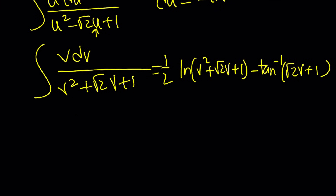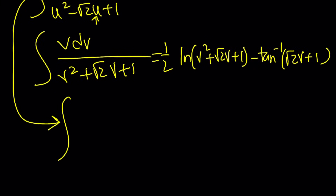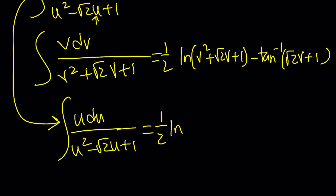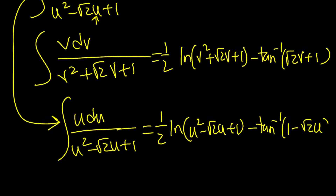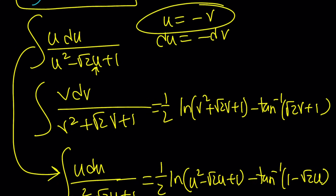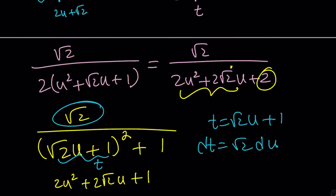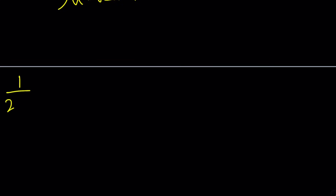Since v equals negative u, we can write the integral of u du over (u squared minus root 2 · u plus 1) as (1/2) ln(u squared minus root 2 · u plus 1) minus arctan(1 minus root 2 · u). Now we put it all together, remembering the 1 over root 2 factor on the outside. Multiplying everything by that gives us the integral of the square root of tangent x.